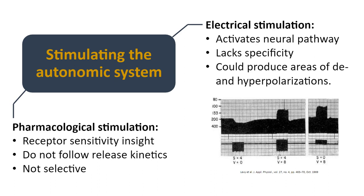The gold standard for simulating the autonomic system has been electrical and pharmacological stimulation — both have been around for decades with certain strengths. With electrical stimulation, you can clearly activate neural pathways, but if you stimulate a given nerve, that nerve travels through different organs. If you want to target only the heart, you won't be able to do it precisely — it lacks specificity and can produce areas of hyperpolarization that aren't safe long-term.